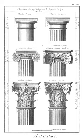Ridge board: a structural member that runs the length of the ridge on a sloped roof to which the upper ends of rafters are attached.